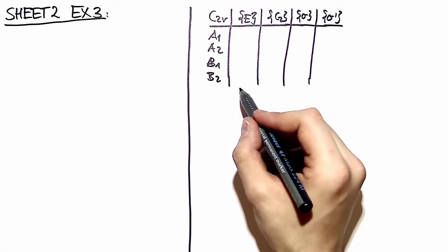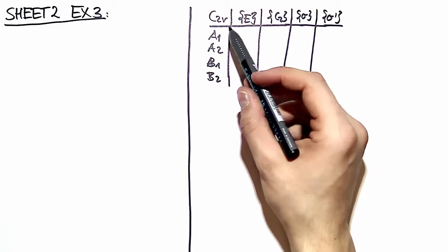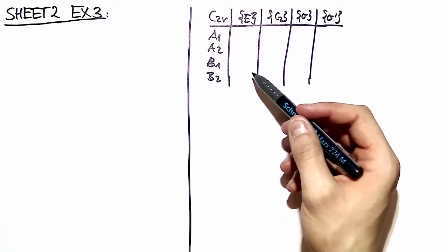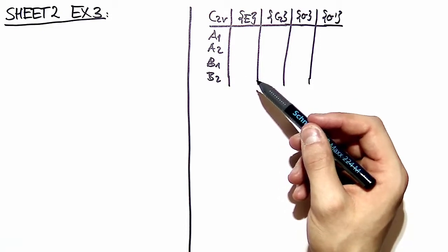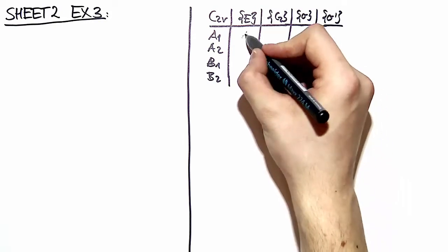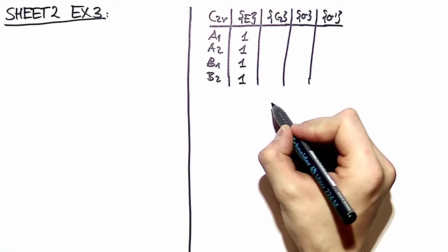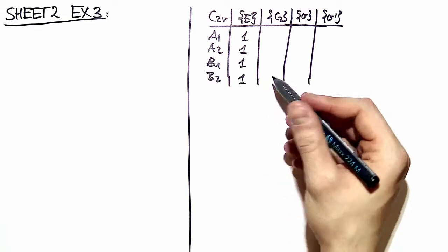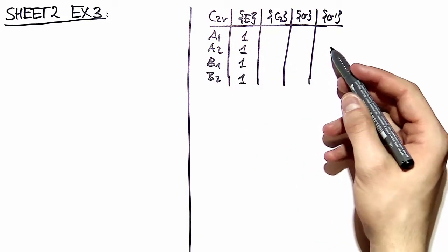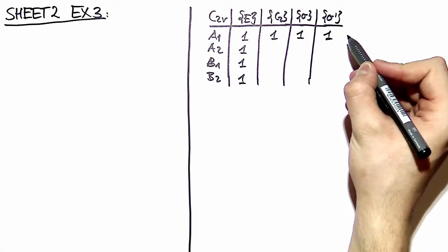Theorem 4 states that the dimension of each irreducible representation squared, when summed over all representations, must equal the order of the group. This means the only way to satisfy this is if we take one-dimensional representations only. The first line is always easy to guess because this is always the identity representation, and you can write ones in there.